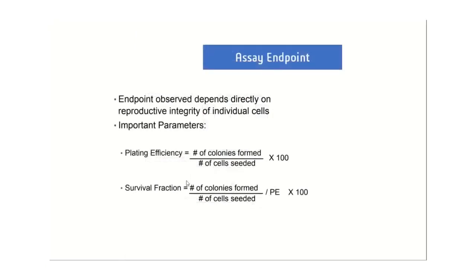After the assay is done, it is important to measure the clonogenic survival — that is, how many colonies survived for the number of cells seeded. This involves two key values: plating efficiency and survival fraction. Survival fraction is the number of colonies counted after the experiment versus the number of colonies plated, with correction for plating efficiency.